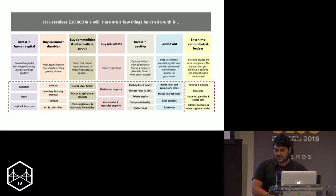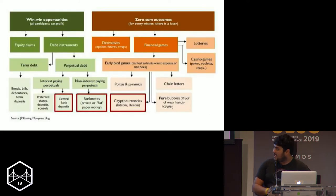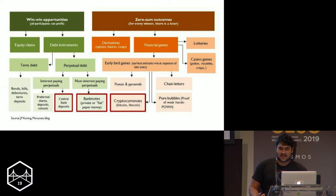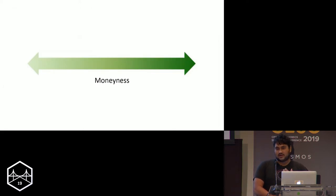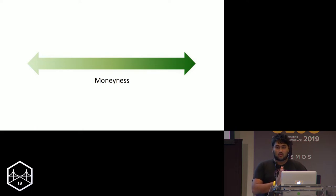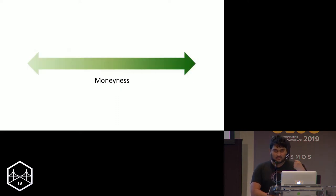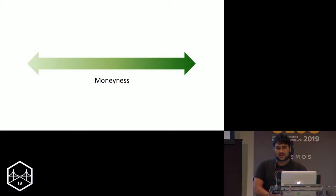If we look at a categorization of different types of assets, nowhere in it is there a category called money. Different assets have properties — they could be liabilities, debt instruments, commodities — but there's nothing called money. So my claim is: money is not a noun. Money is an adjective describing a property of an asset rather than a category. More importantly, it is a spectrum. Bananas might have some level of moneyness, but clearly not very high moneyness.